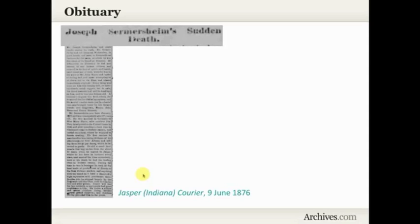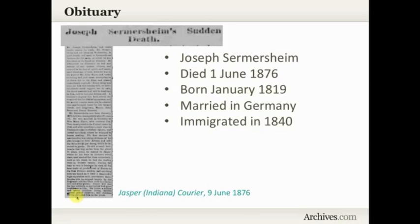Here's an example from a newspaper — the Jasper, Indiana Courier from the 9th of June, 1876, with the headline 'Joseph Sermersheim's Sudden Death.' It's a pretty long obituary, so I've pulled out some of the key facts. The deceased, Joseph Sermersheim, died the 1st of June, 1876. His obituary tells us he was born in January 1819, that he was married in Germany, and that he immigrated to the United States in 1840. A lot of really good biographical information — but note that it says married in Germany. That's as specific as the obituary gets. It doesn't give us a town or a region, just married in Germany.